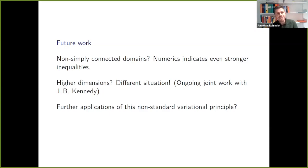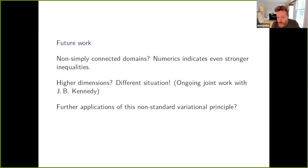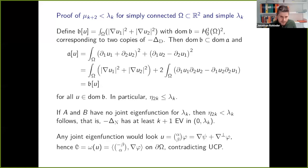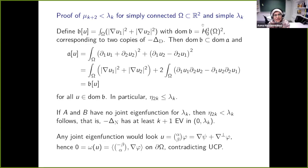Thank you for your attention. We have time for questions. Can you write down the formula for operator A? The operator A acts as the Laplacian on two-component vector fields. Its boundary conditions include the tangential condition from the quadratic form, and in a weak sense the vorticity vanishes on the boundary.